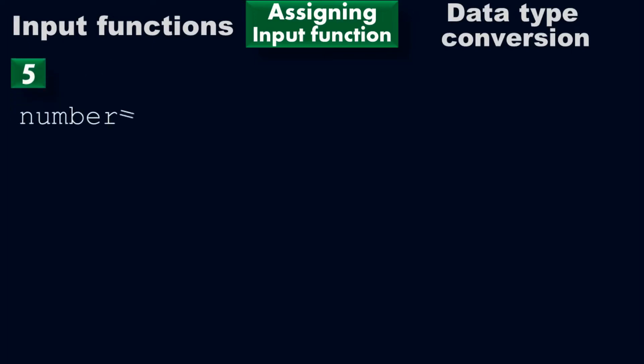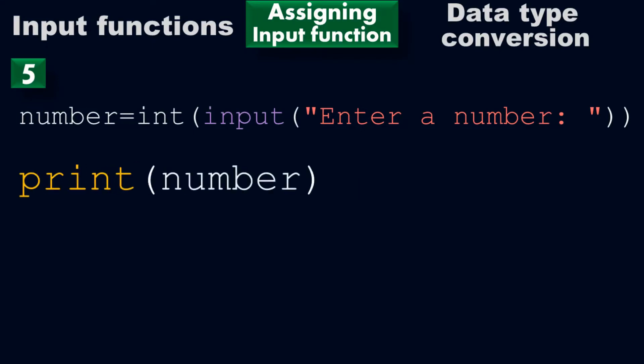Example number 5. Number equals int of input of 'Enter a number' with a space, and then print number. You will get 'Enter a number: 4.0' and then press enter. You will get 4.